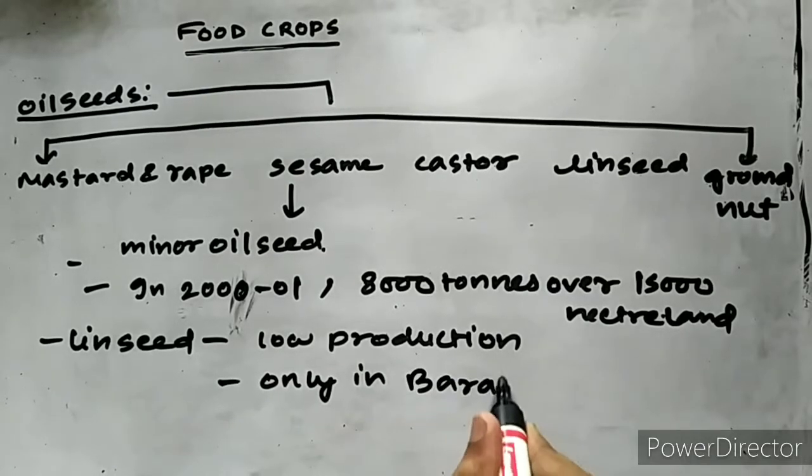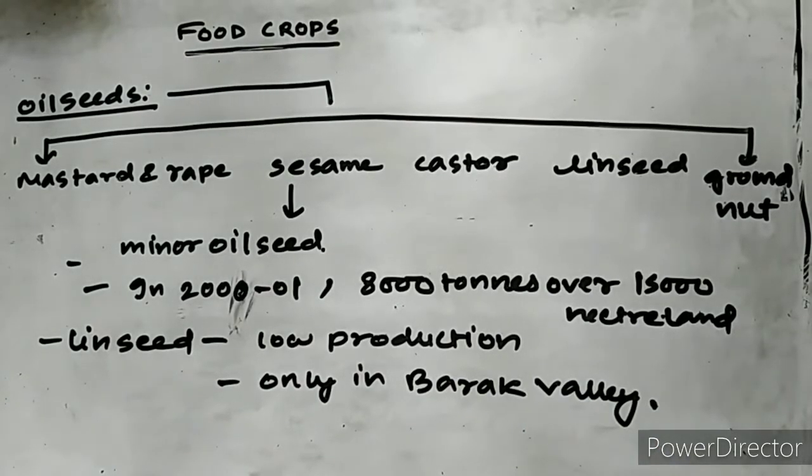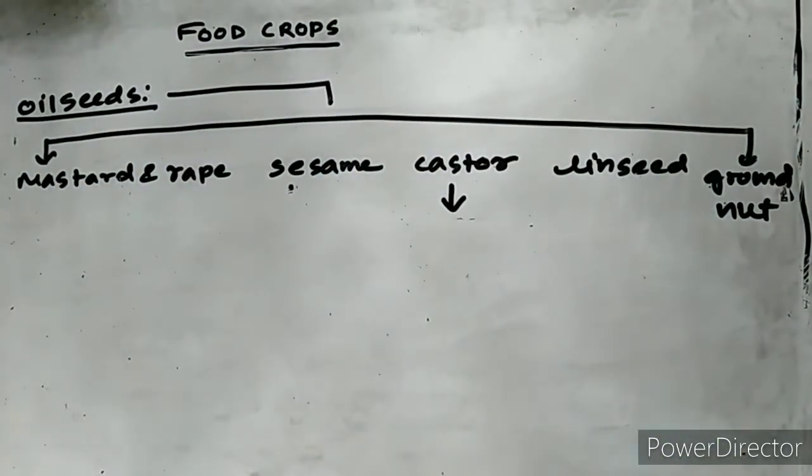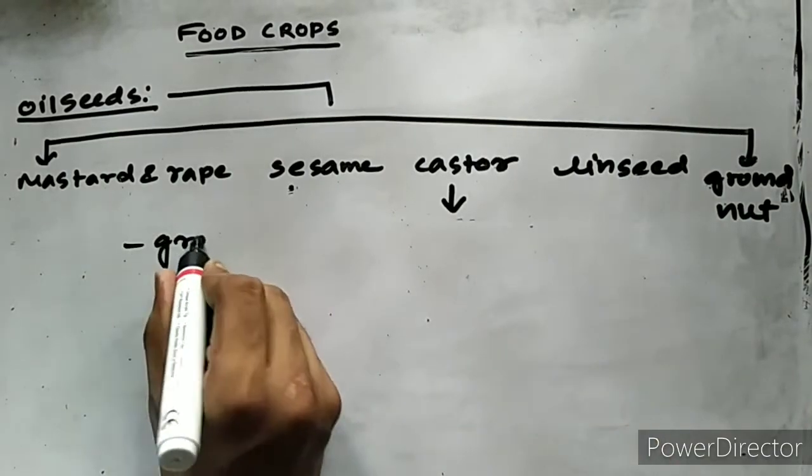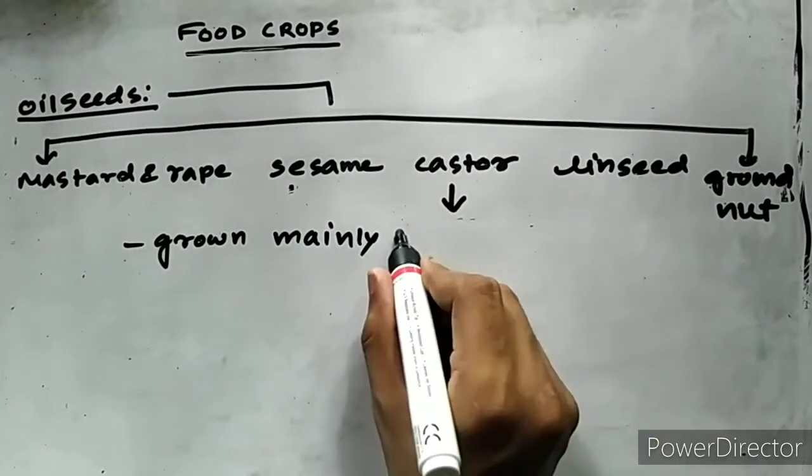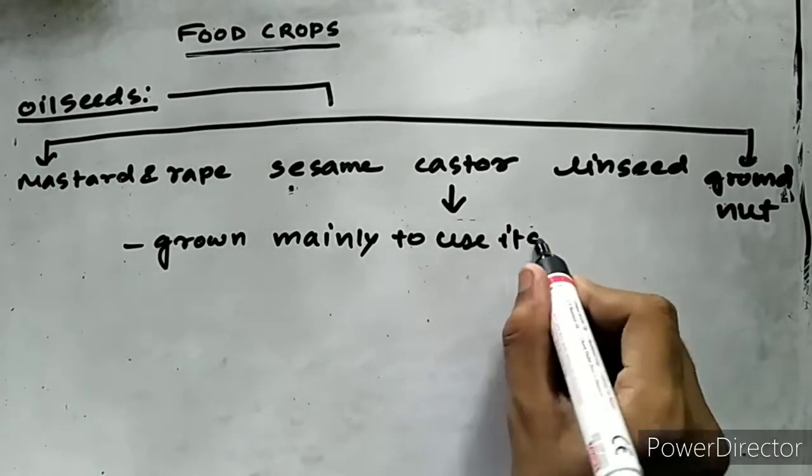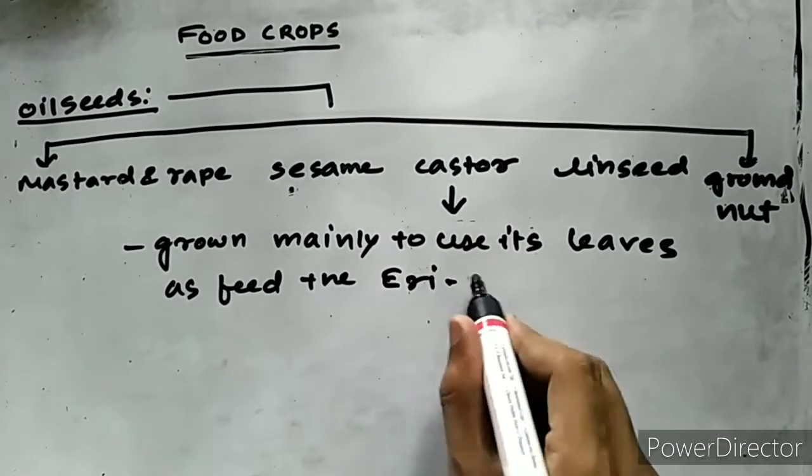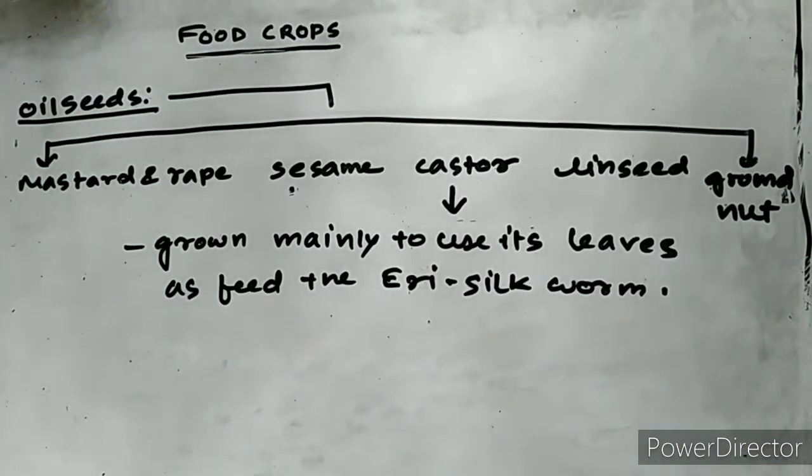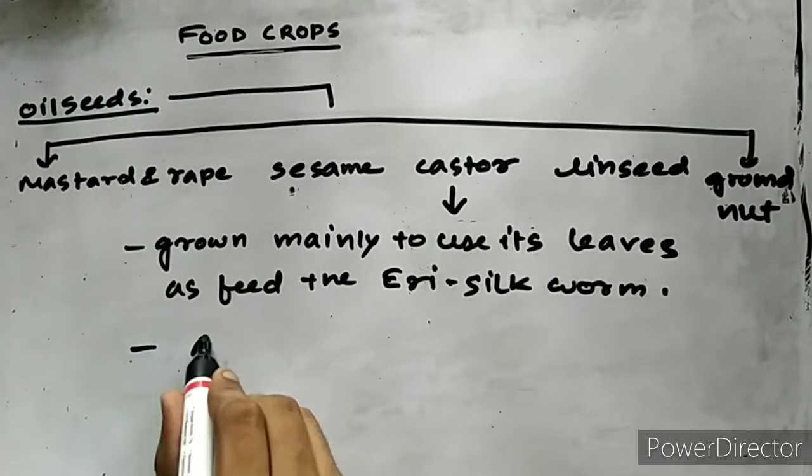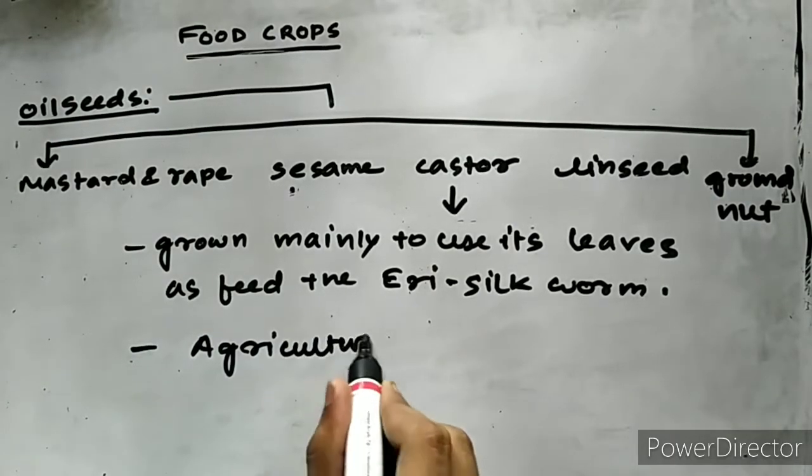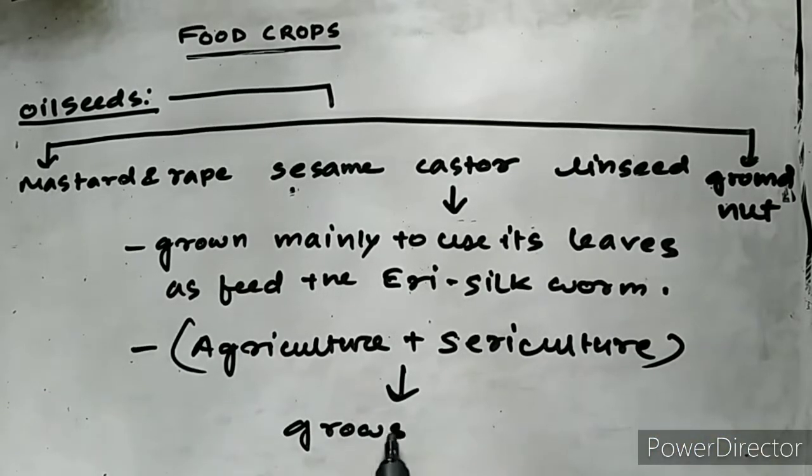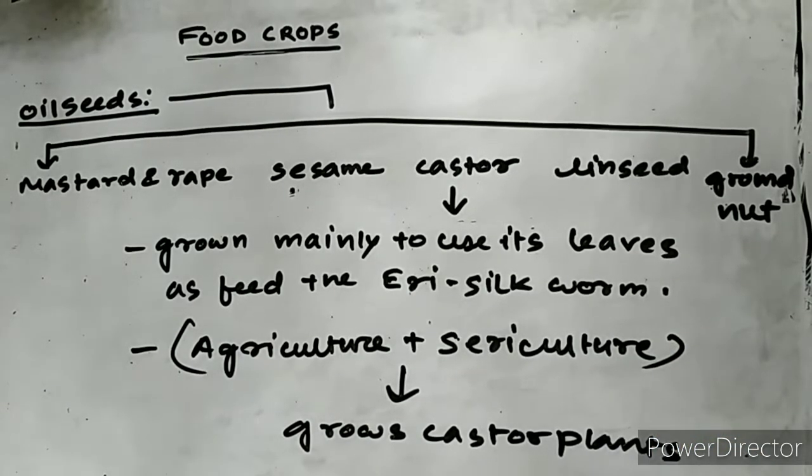Besides that, castor is grown in some parts of Assam mainly to use its leaves to feed the Eri silkworms. Many parts of the state grow castor plants.